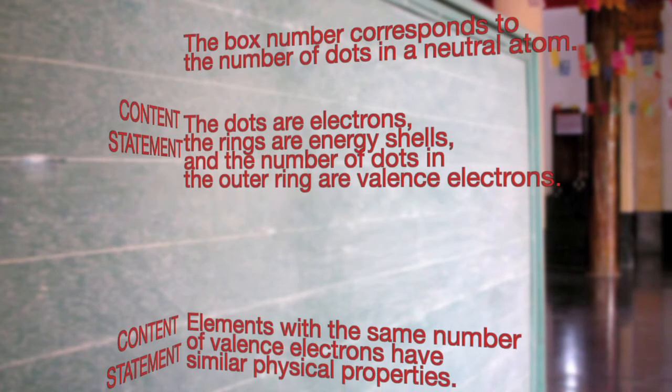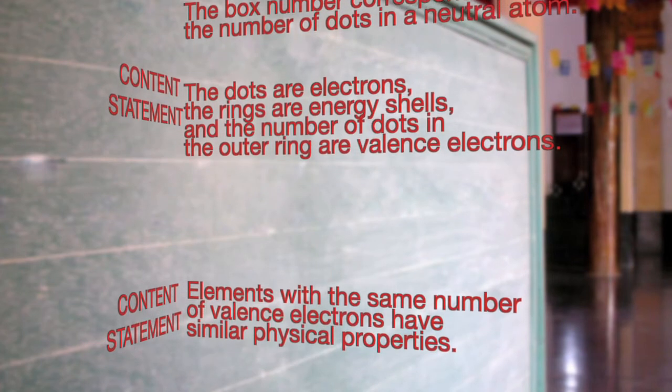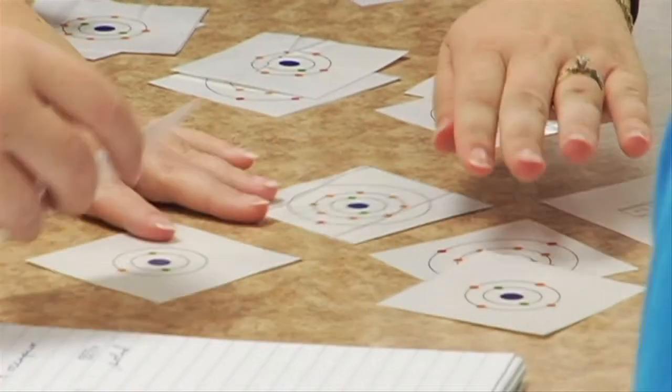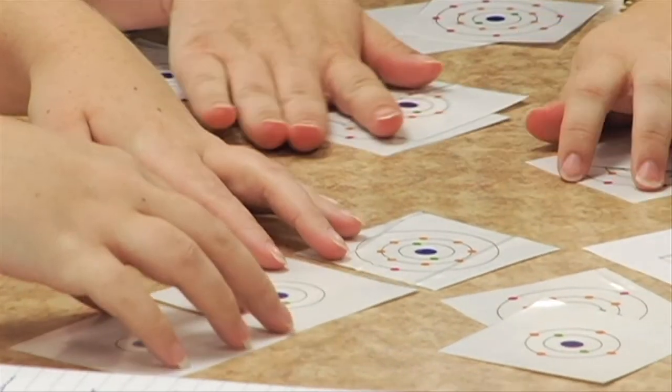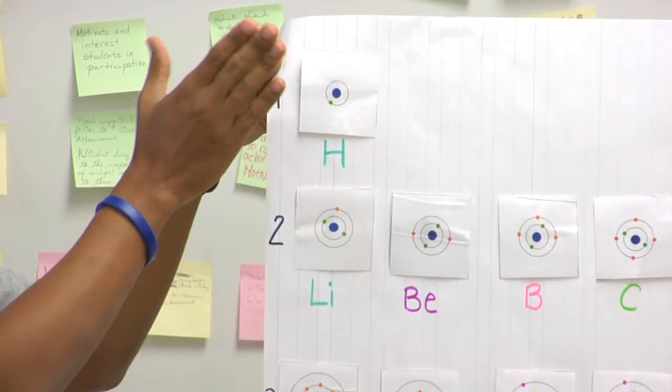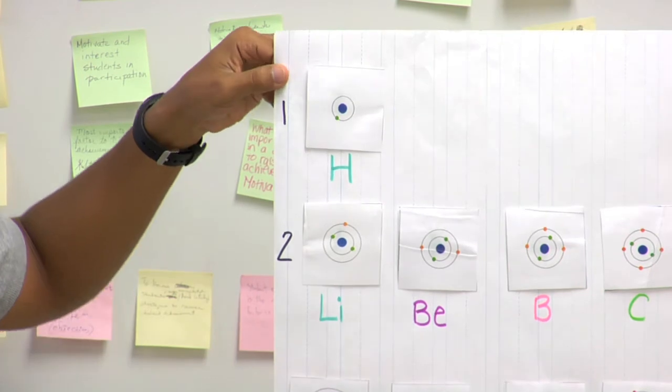Elements with the same number of valence electrons have similar physical properties. So, now you can fully understand the periodic table and how it relates to your own sorting strategies.